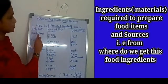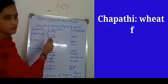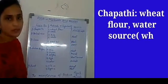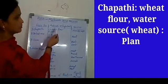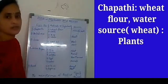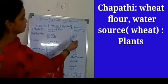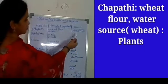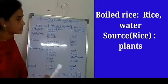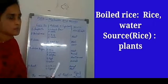First, if you take chapati, it requires only two ingredients: wheat flour and water. Wheat flour is nothing but processed wheat. We get wheat from plants or crops — crops are seriously grown plants in a farmland. So the source of wheat is plants. For boiled rice, it also requires just two ingredients: rice and water. The source of rice is again plants.